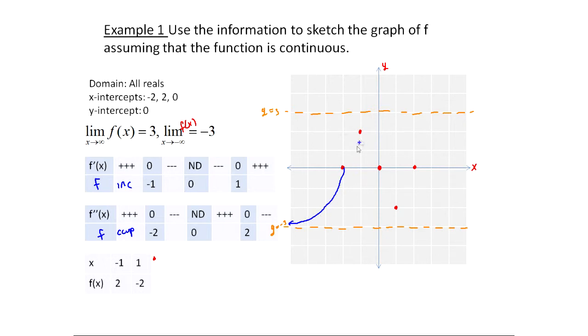All right, now, it's supposed to keep increasing until I get to here, but then notice at minus two, it's an inflection point. I change over to concave down. Okay. So, it keeps increasing, but we switch over to concave down.